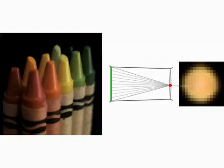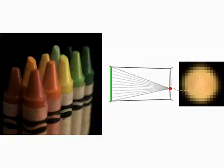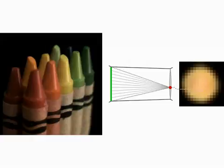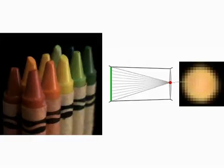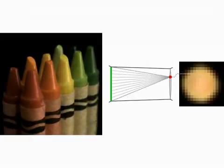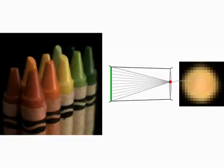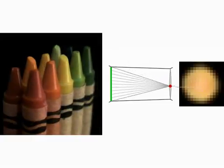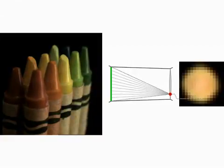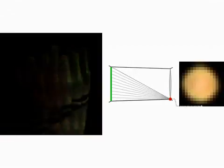Choosing a different pixel from each microlens image, we can move the observer laterally across the original camera aperture. Of course, if we move too far, we will eventually reach the edge of the microlens image — the view will vignette and eventually disappear.